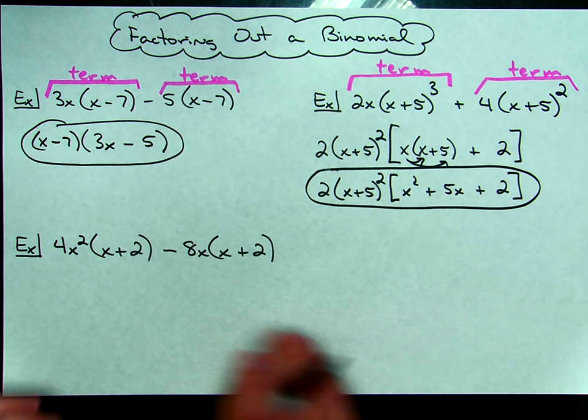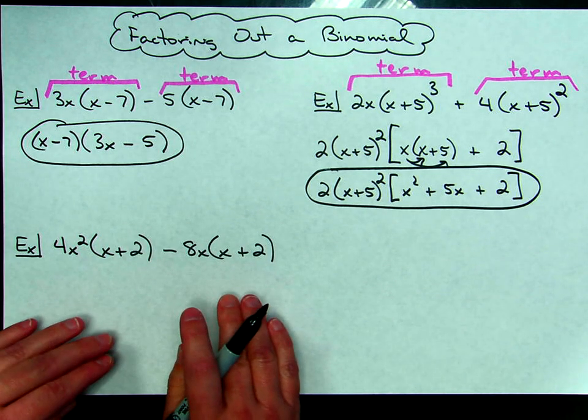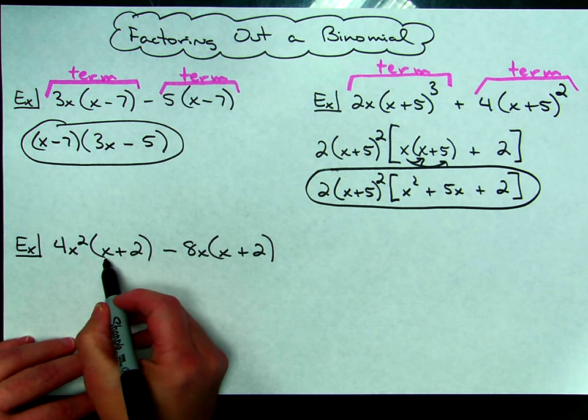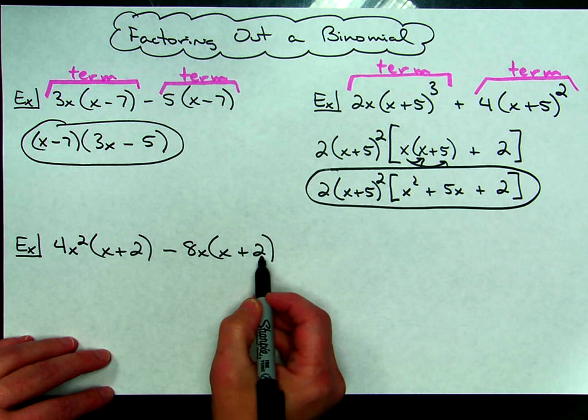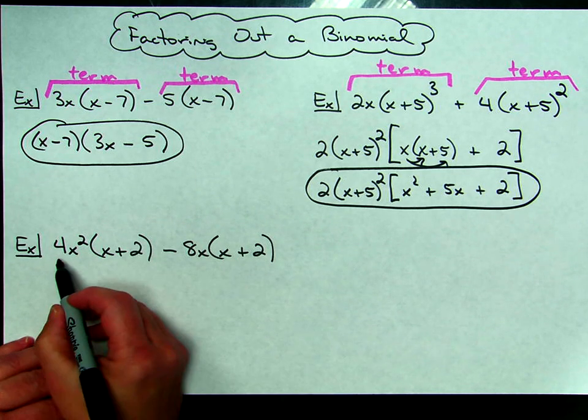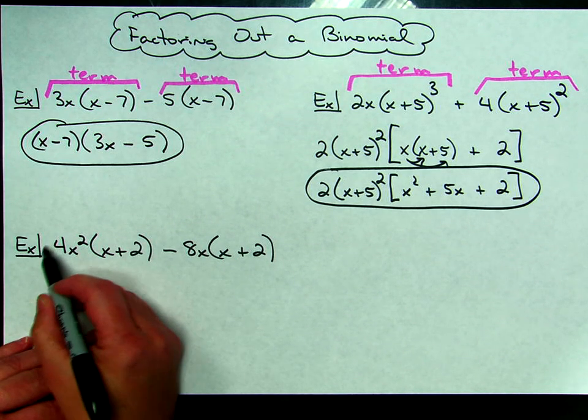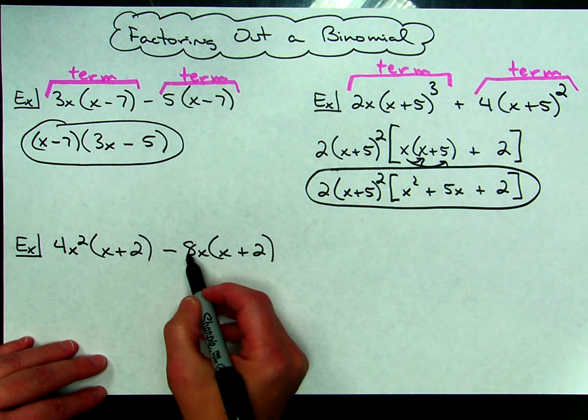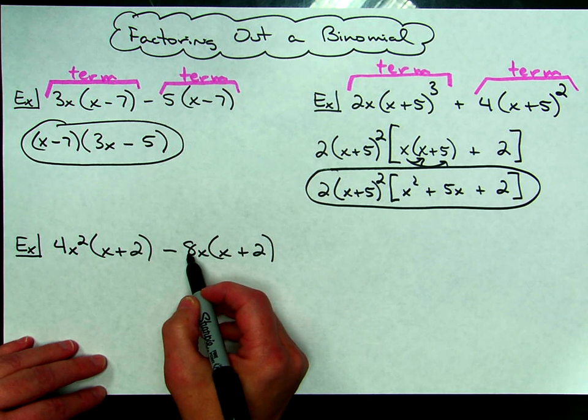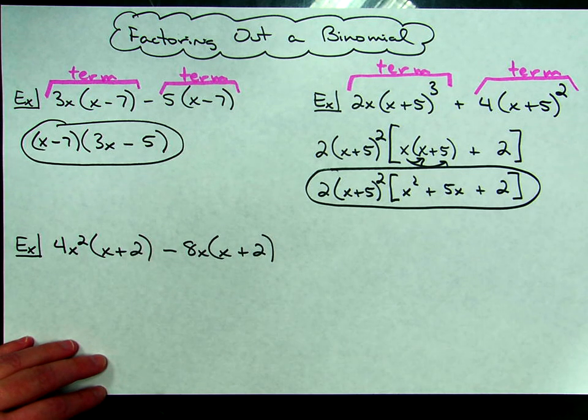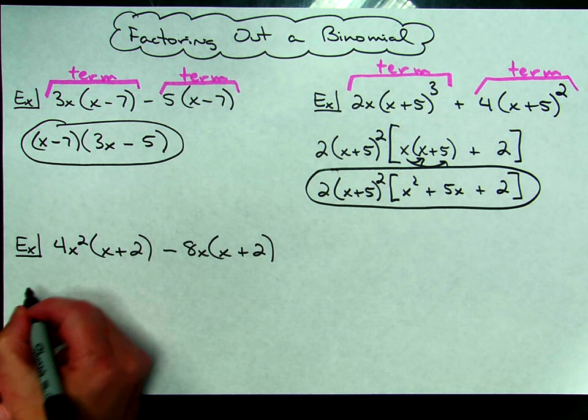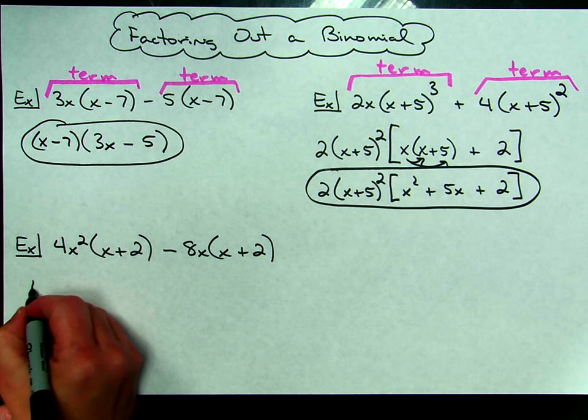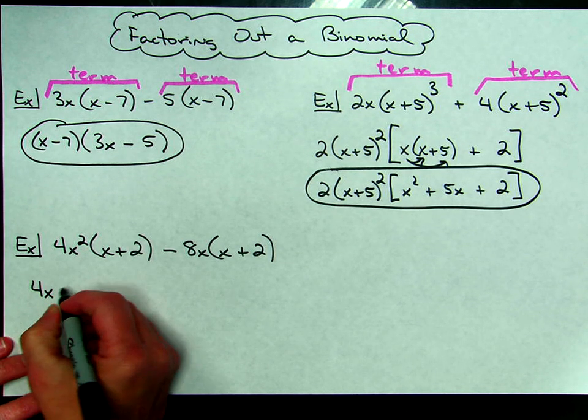For this last example, again I'm taking, I'm going to take out a greatest common factor that is consisting of a binomial, but looking at those coefficients there in front, I've got a 4 and an 8, so I can take out a 4 out of both of the terms, I've got an x squared and an x, and I can take that out as well. So, my greatest common factor is going to be a 4 and an x, and then an x plus 2.